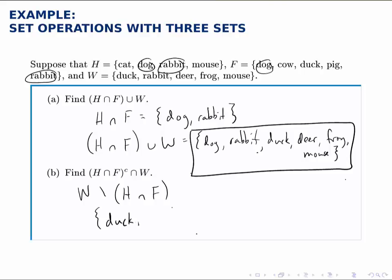So that would be duck, deer, frog, and mouse. So that set with four elements is the answer to part B.